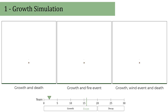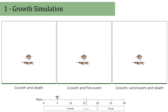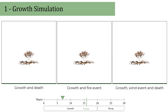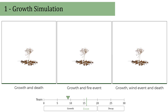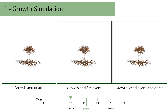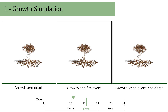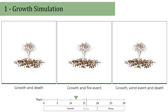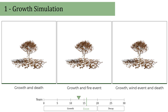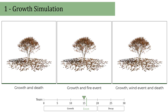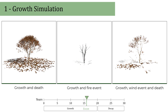We present our growth simulation of a single tree spanning the seasons and years. We apply a specific event — fire or windstorm — when the tree is 16 years old. Then we kill the tree at the 20-year mark to demonstrate the decay process.